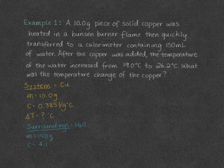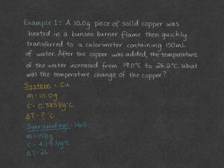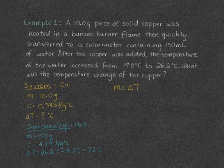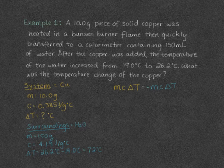The specific heat capacity of water is 4.19 joules per gram degree Celsius, also available in your data booklet. The change in temperature is 26.2 degrees Celsius minus 19, which gives us 7.2 degrees Celsius. Now we can equate our two equations: MC delta T for our system is equal to MC delta T for our surroundings, with a negative sign in front of the surroundings because our copper is going to get colder.